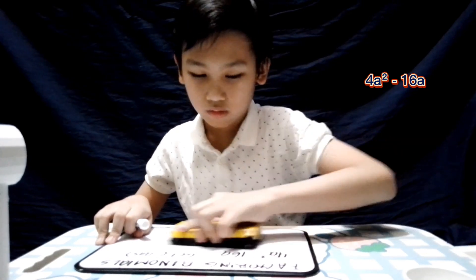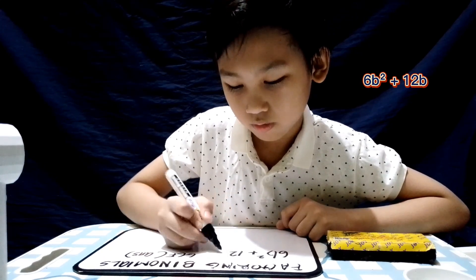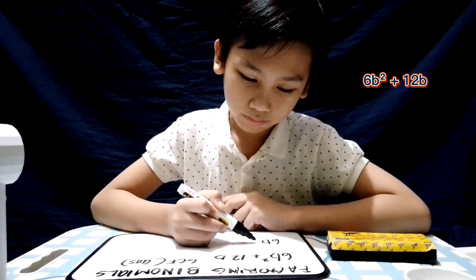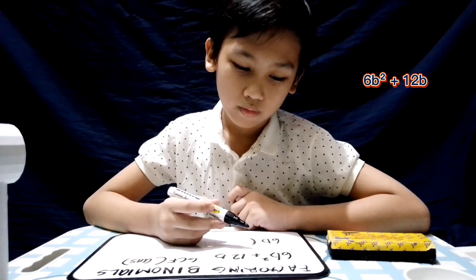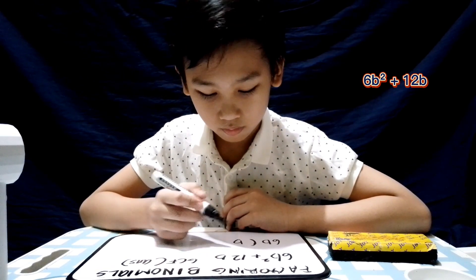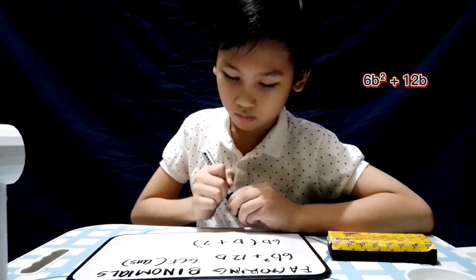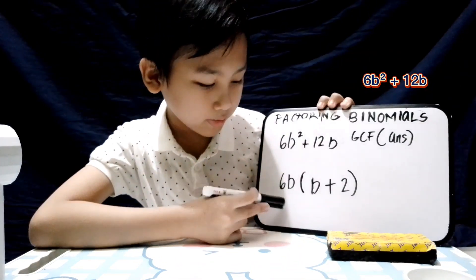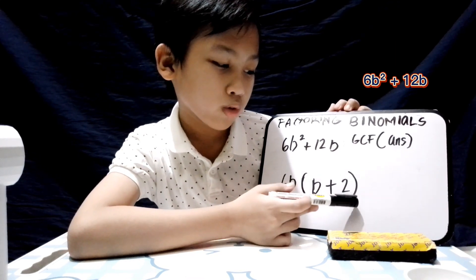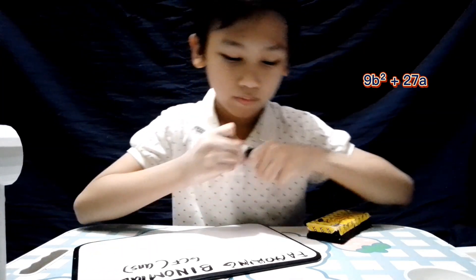Next: 6b squared plus 12b. Same — they have the same variable. The answer is 6b times open parenthesis b plus 2, close parenthesis. Very good.